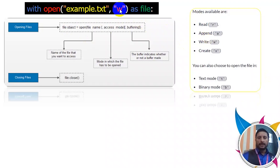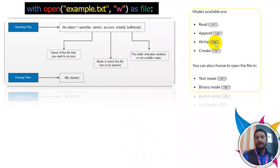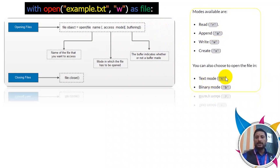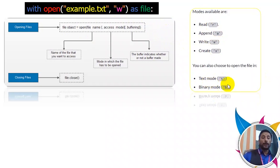In the modes, you can use: R for read, A for append, W for write, X for create. The text mode is T and binary mode is B. If you want to open in text mode or binary mode, you can specify that.